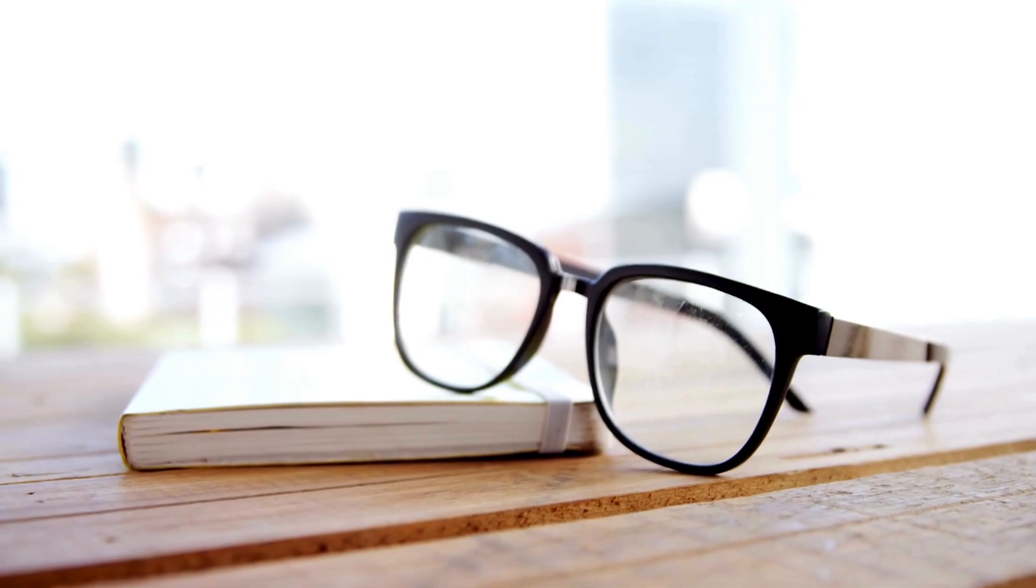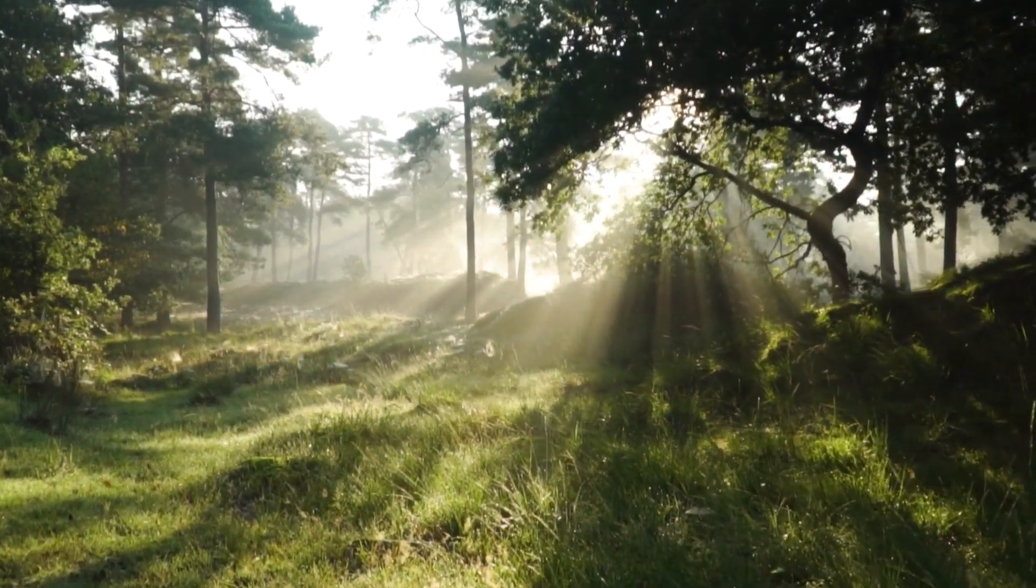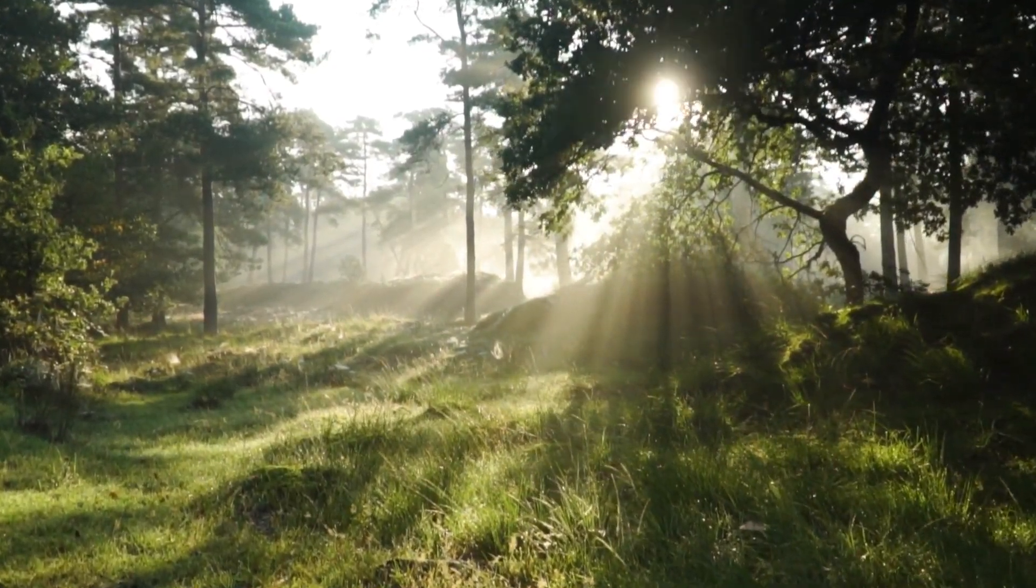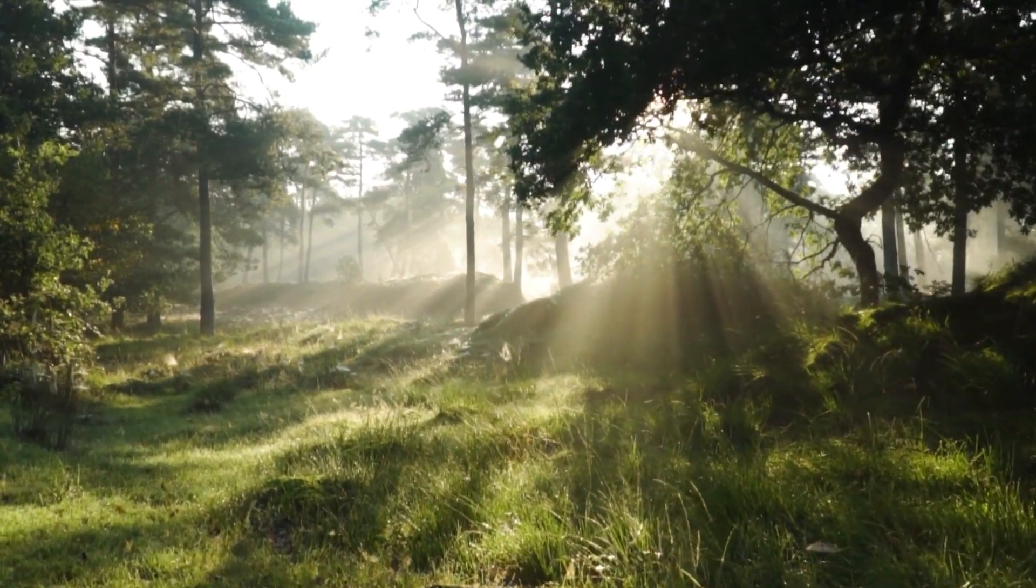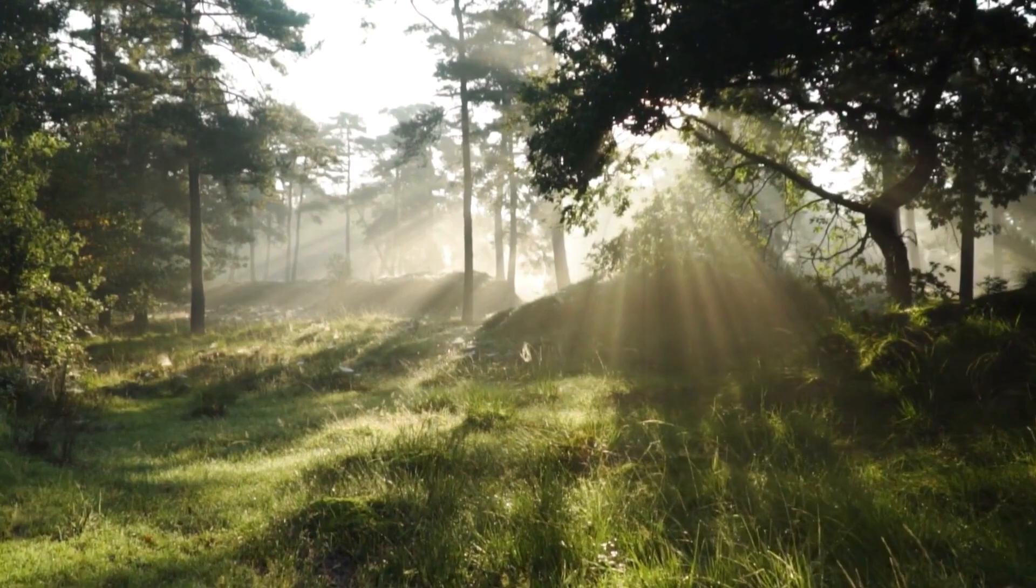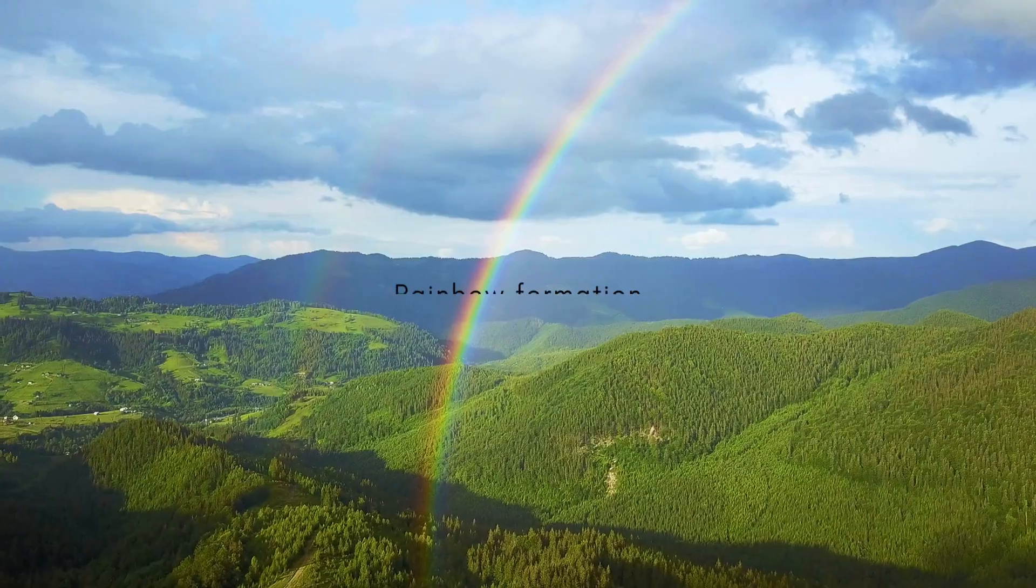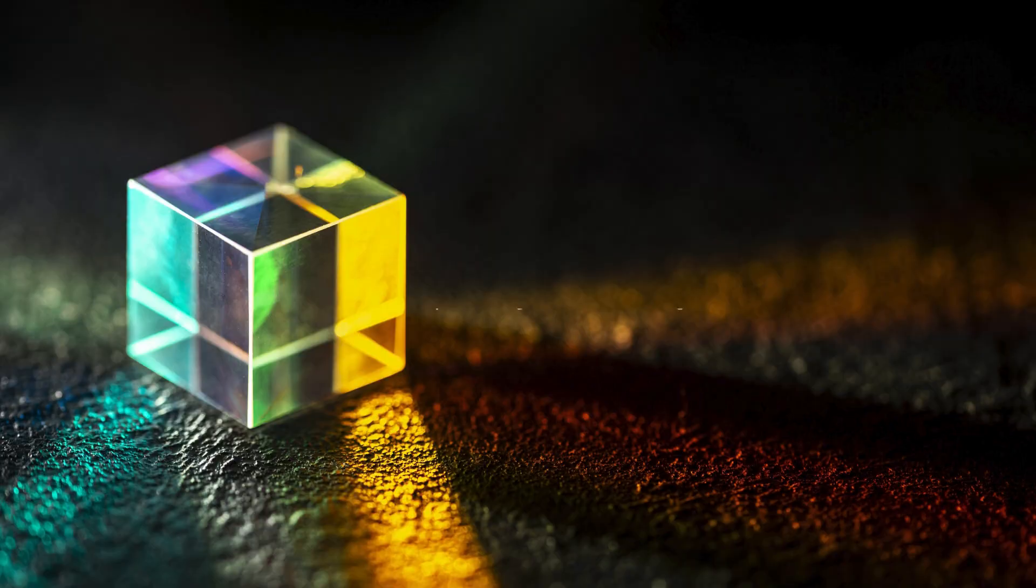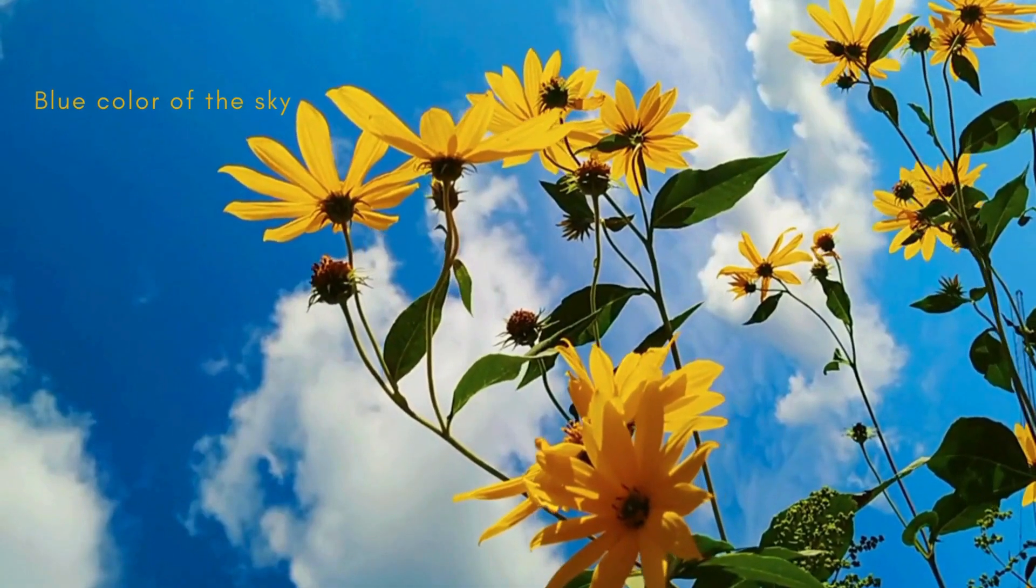We have learnt in the previous chapter about light and some of its properties. In this chapter, we shall use these ideas to study some of the optical phenomena in nature. We shall also discuss rainbow formation, splitting of white light, and the blue color of the sky.